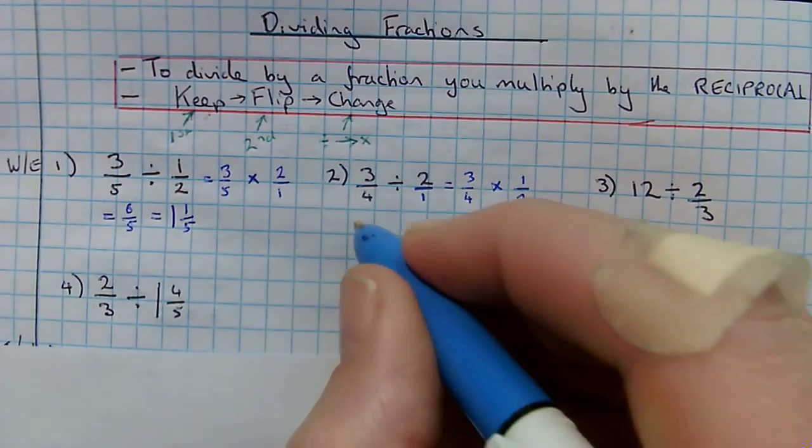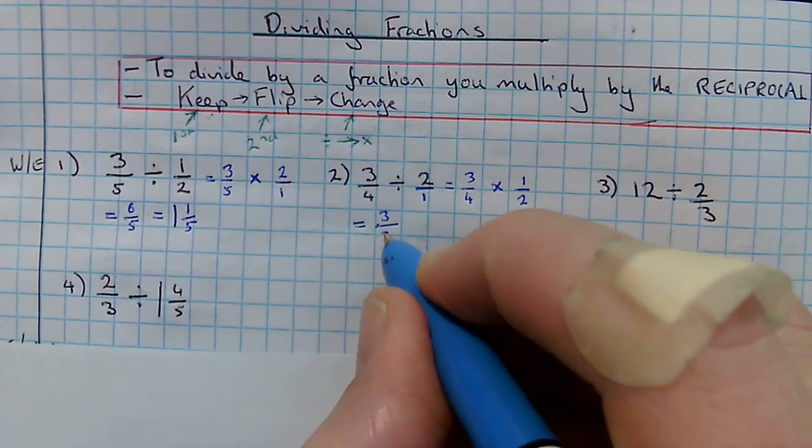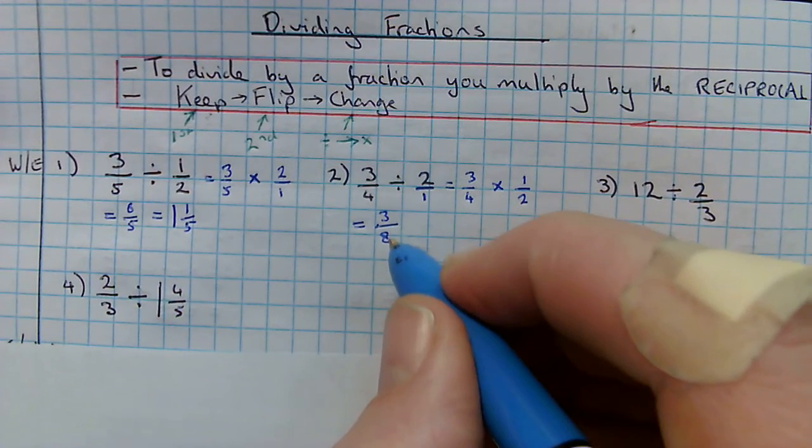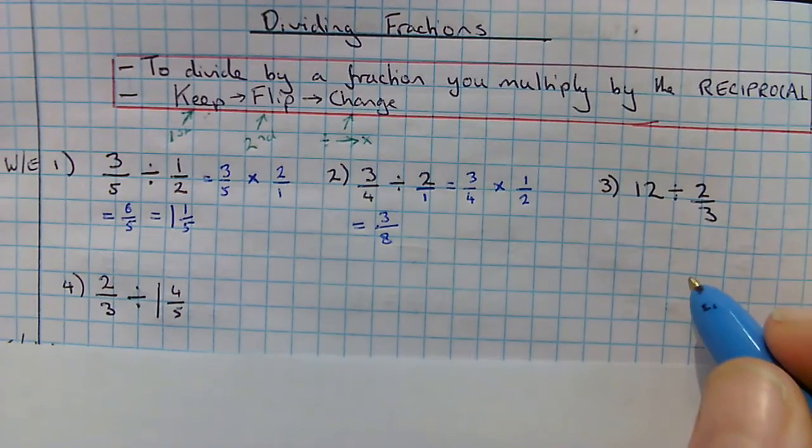3 times 1 gives me 3. 4 times 2 gives me 8. That's already in its simplest form. It's not top-heavy. I can leave that answer as it is.